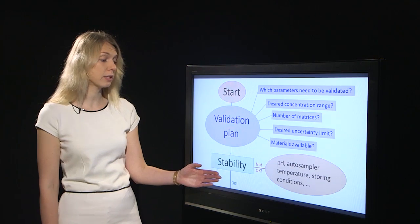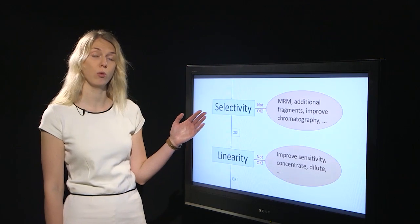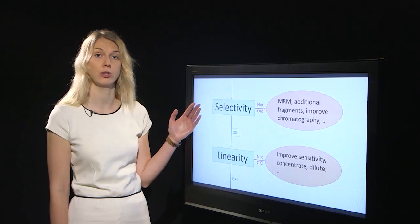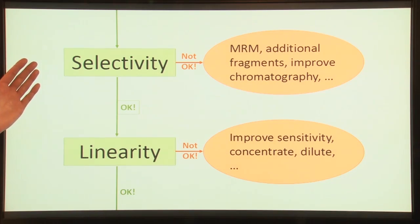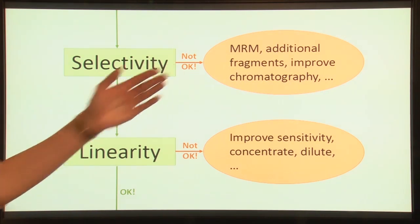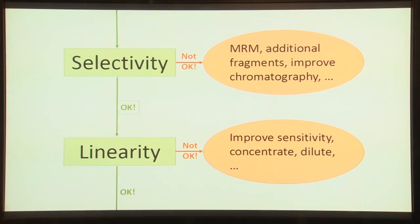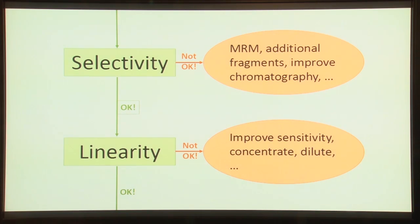If the stability is acceptable we can move on with the validation to selectivity. If selectivity is not acceptable you could try changing the fragment that you monitor during your LC-MS-MS run, or maybe add a fragment, or try to separate the interfering compounds with chromatography.